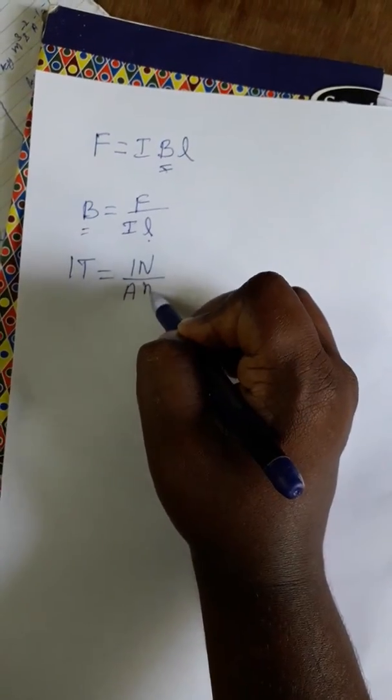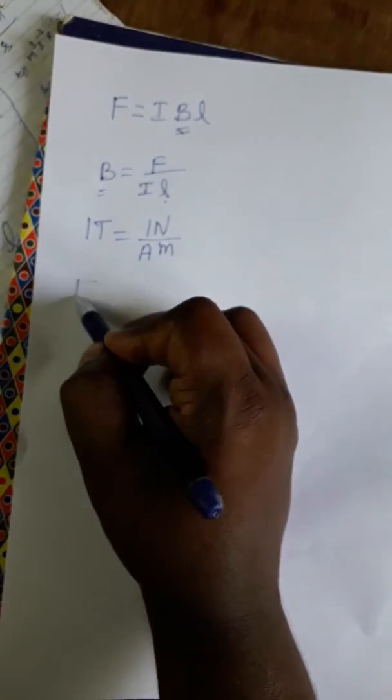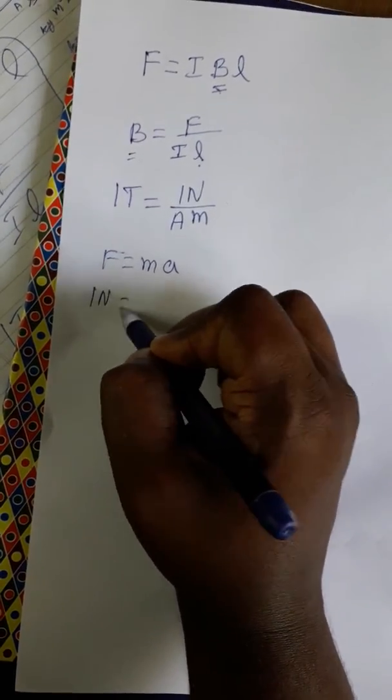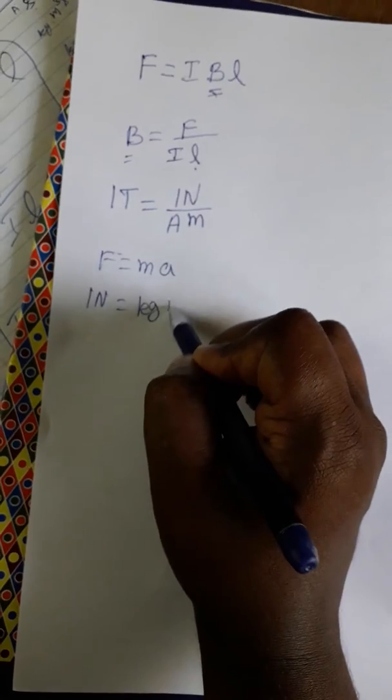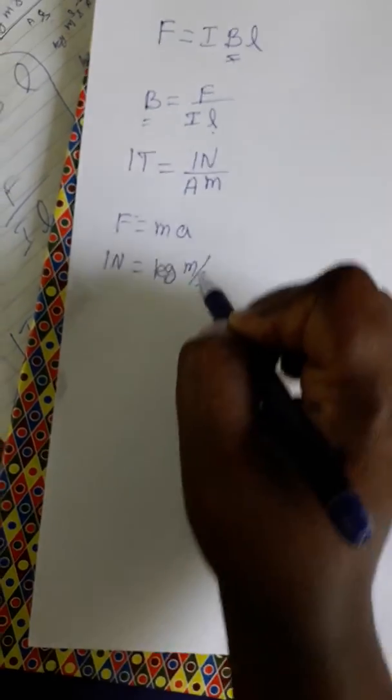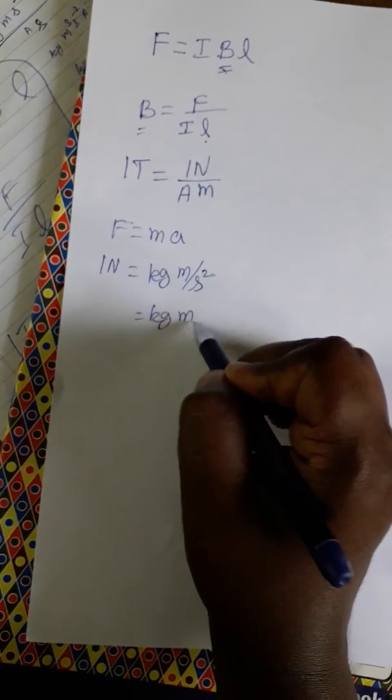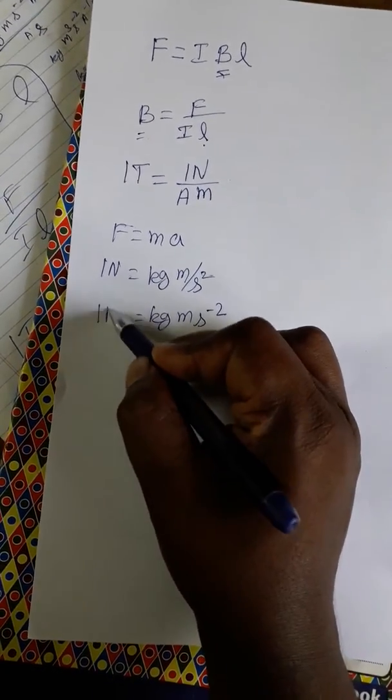So force is equal to mass into acceleration. Force is Newton, mass is kg, acceleration is meter per second square. So kg meter per second minus two is for one Newton.